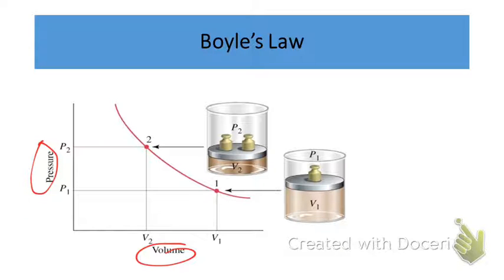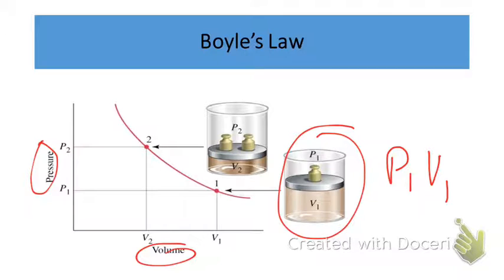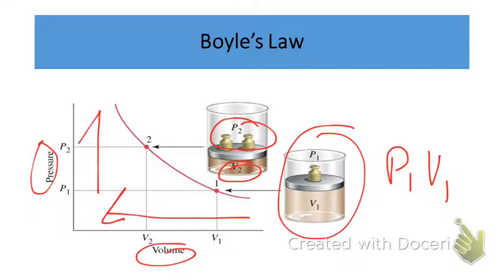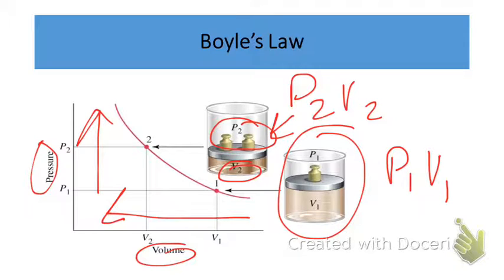Here we have our initial condition, the P1, V1 state. Then we change the volume — the volume gets smaller, which means the pressure goes up, as indicated by the two weights. Volume goes down, pressure goes up — these are new conditions P2, V2. We can show this both mathematically and graphically. To summarize, the pressure and volume of an ideal gas are inversely proportional to each other.